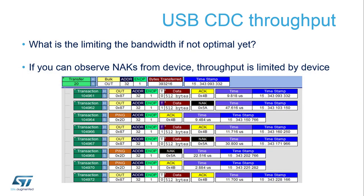Going back to the problem of USB host frequency of sending requests: the question is how to get information about throughput and where the limitation is — from the host or from the device design. The simplest method is using a USB analyzer. From the communication trace, if you observe NAKs from the device, speed is limited by the device because it cannot answer all host requests on time and must occasionally not-acknowledge requests, which limits bandwidth.